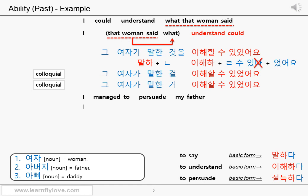Let's rearrange the words: I, my father, persuade, managed to. Let's ignore the subject I. My father — my is 제, of course, but you don't have to use it all the time in Korean, especially when the subject I is understood in the sentence. Father is 아버지. 아빠 sounds more like 'daddy'. It depends on your preference, but 아버지 sounds more polite and formal. Anyway, let's use 아버지 and add the object particle 를: 아버지를.